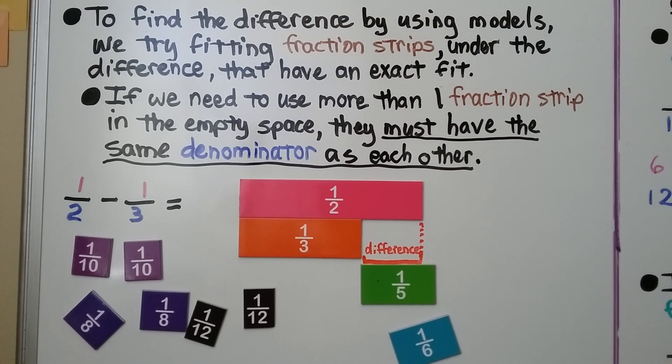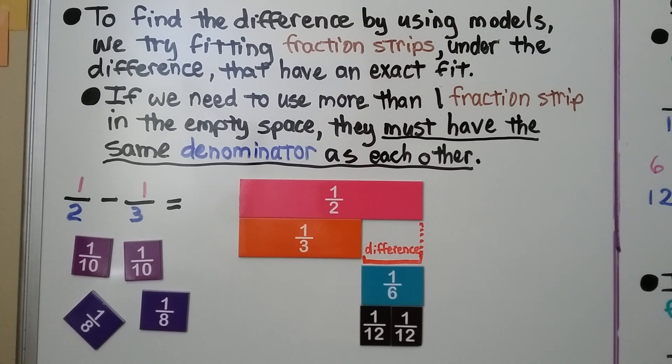We can also see the one-fifth piece is too big. It doesn't fit exactly. And we see the one-sixth piece does fit. It fits perfectly. We can see two one-twelfth pieces also fit. But we want it to be in simplest form, so we choose the least amount of fraction strips, and that would be the one-sixth piece.